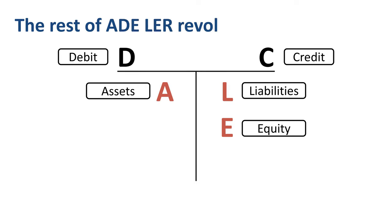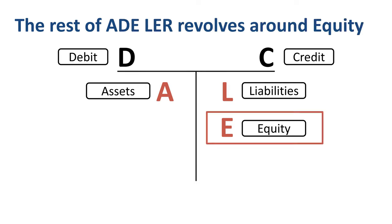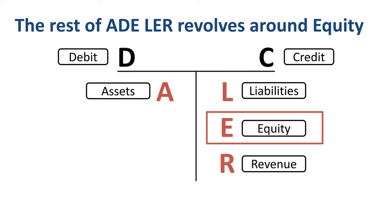Now for the second half of DC ADE LER. The other three letters that we have not covered yet are all connected with the E of equity. Equity is also called shareholders capital. In a way, this is the amount owed to shareholders. The main driver of income in most companies is revenue. The normal balance for revenue is a credit. This is directly connected to the fact that if companies earn revenue, then the shareholders benefit from this and equity goes up.